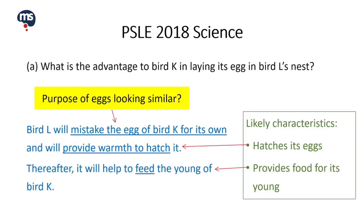Let us now look at the answer. Bird L will mistake the egg of bird K for its own and will provide warmth to hatch it. Thereafter, it will help to feed the young of bird K.